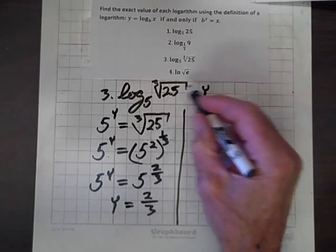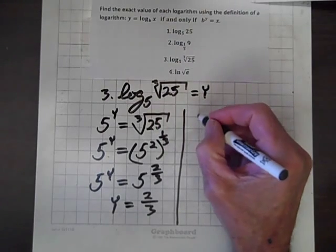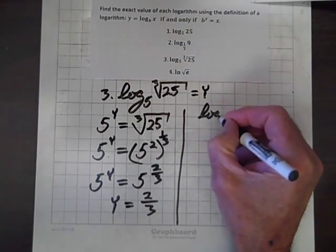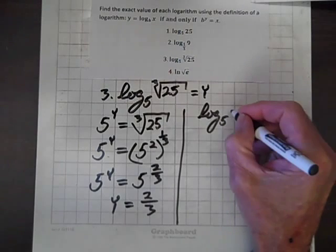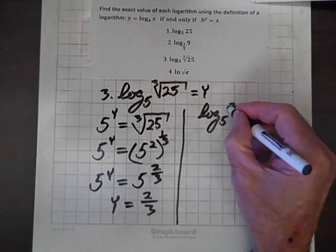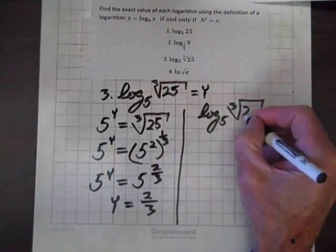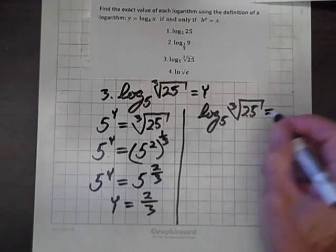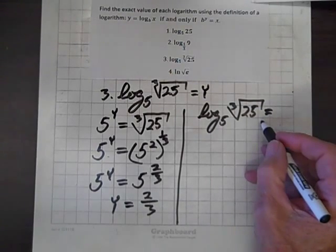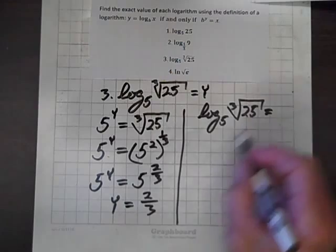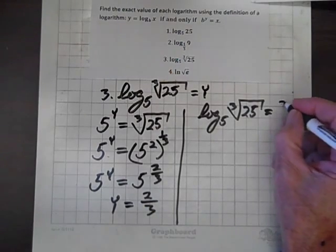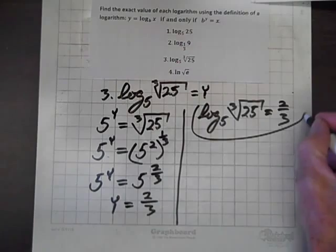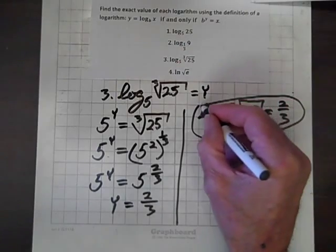Since y equals log to the base 5 of the cube root of 25, this expression must equal 2/3. And we've simplified another one.